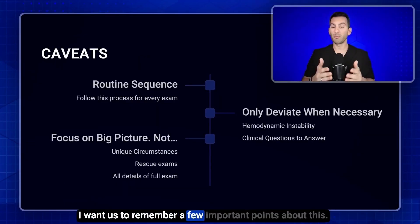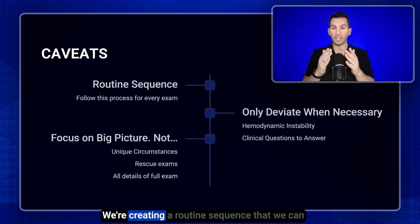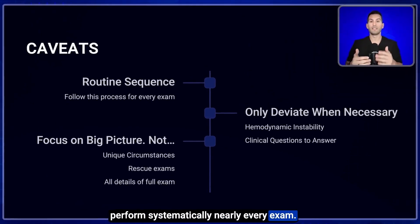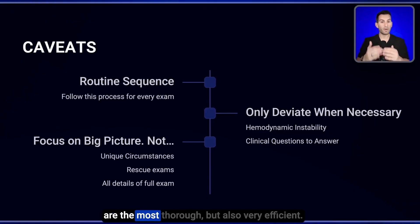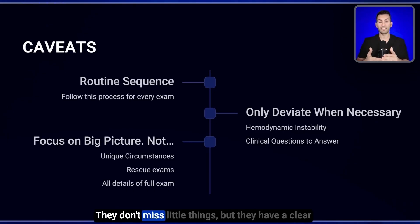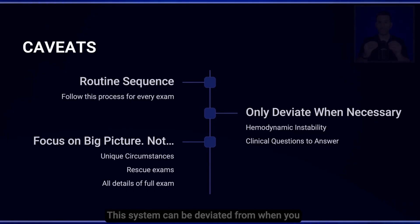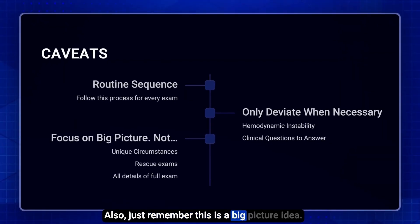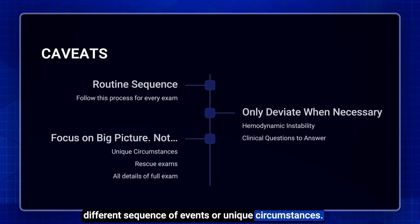We're creating a routine sequence that we can perform systematically nearly every exam. Some of the best healthcare providers are the most thorough but also very efficient because they're systematic — they don't miss little things, but they have a clear sequence of events so they can go through them quickly. This system can be deviated from when you have hemodynamic instability or a clinical question you need to answer urgently. Also, this is a big-picture idea — it doesn't apply to rescue echo where there's a different sequence of events.